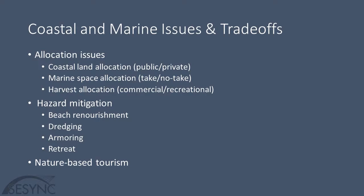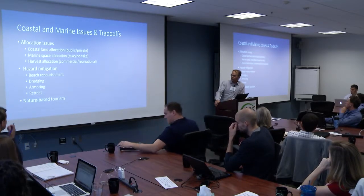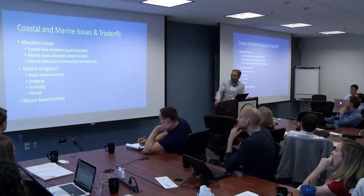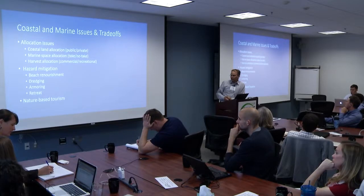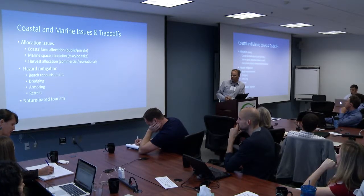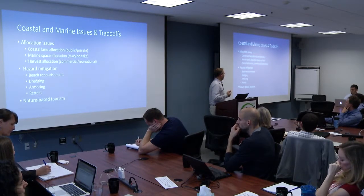Allocation — coastal land allocation. The interesting thing about the coastal zone is that on the water side we've got public lands, and oftentimes on the landward side we've got private lands, and the interface between those two has some issues. Marine spatial planning is an important thing coming soon — take no-take zones, protected areas, how much protection. Harvest allocation between competing uses — commercial versus recreational, even subsistence. Hazard mitigation: sea level rise, storms. Nature-based tourism is a tough thing to address — we like it because it hopefully involves conservation, but the more people we bring in, the more pressure on the resources, so there's a balancing act.